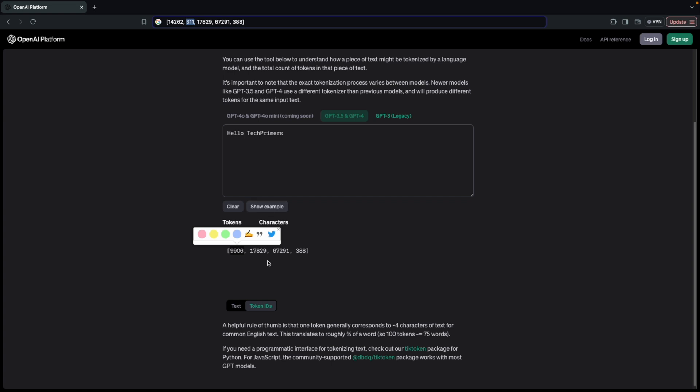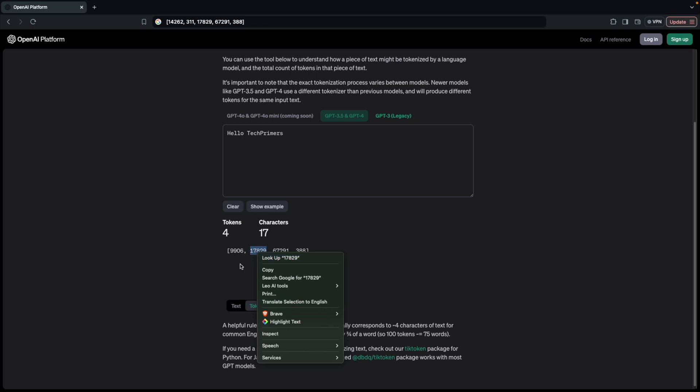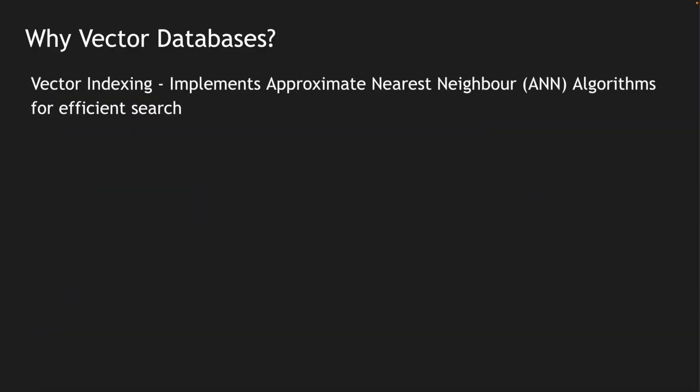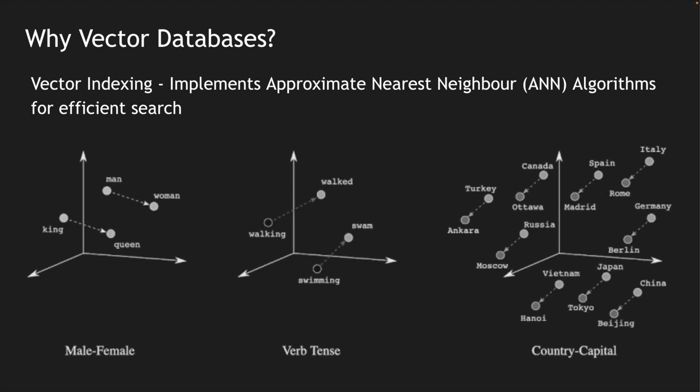Only the first number changed because earlier we had 'welcome to' and now that text is replaced. This is how relationships are built within the vector ecosystem, represented in terms of vector indexes using different algorithms. For example, there is an algorithm called Approximate Nearest Neighbor, which is useful for creating efficient searches — when I search for 'Tech Primers' I can get both 'Welcome to Tech Primers' and 'Hello Tech Primers' as results.